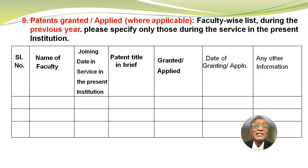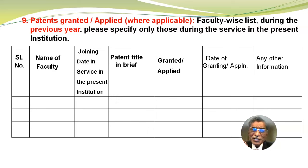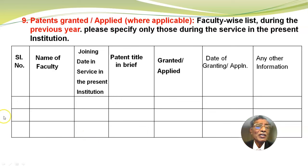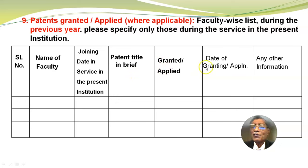Then patents granted or applied, wherever applicable — in all departments it may not be applicable. Faculty-wise list during the previous year. Please specify only those during service in the present institution, in this format: serial number, name of the faculty, joining date of service in the present institution, patent title in brief, granted or applied, date of grant or application, and any other information you wish to include.